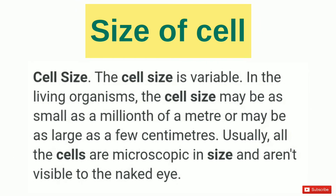The cell size is variable in all living organisms. The cell size may be as small as a millionth of a metre or may be as large as a few centimetres. Usually, all the cells are microscopic in size and are not visible to our naked eye.